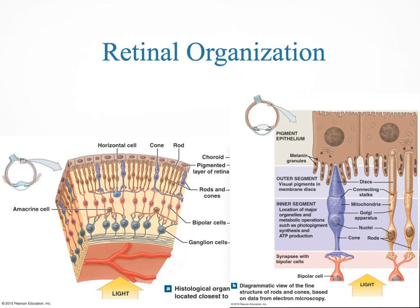This shows how the retina is organized. Light comes through and goes all the way back to the rods and cones — rods detect black and white, and cones detect color. From here it synapses with a few cells: the bipolar cells and the amacrine cells. But the key cell to remember is the ganglion cell, which is the one that comes together and exits to form your optic nerve. And that's all we need to know for the eyes right now.